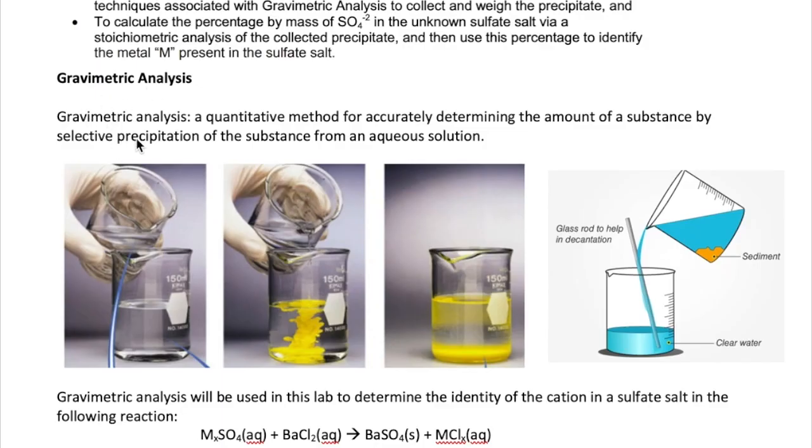The term gravimetric analysis literally means analysis using weights. So in this case, what we're trying to do is determine the identity of an unknown by measuring masses of substances. Gravimetric analysis can be done on any type of chemical reaction. In today's lab, we will specifically carry this analysis out on a precipitation reaction, which is a reaction that produces a solid product.